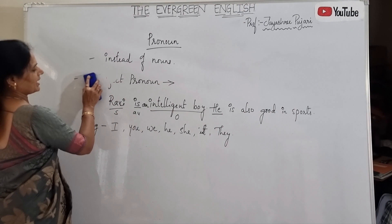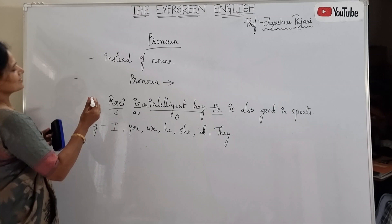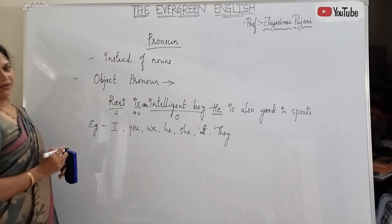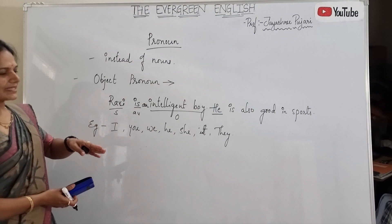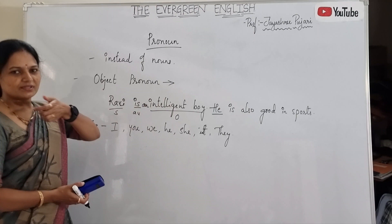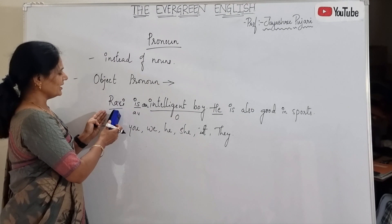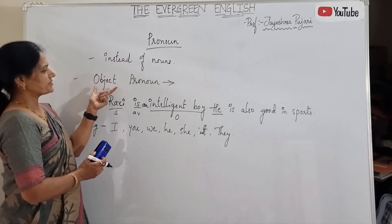Next, we shall move on to object pronouns. As the name suggests — object — object pronouns are the words which take the place of the object in a sentence. In 'Ravi is an intelligent boy,' this is the subject, verb, and object. Object pronouns are the words which take the place of that object.